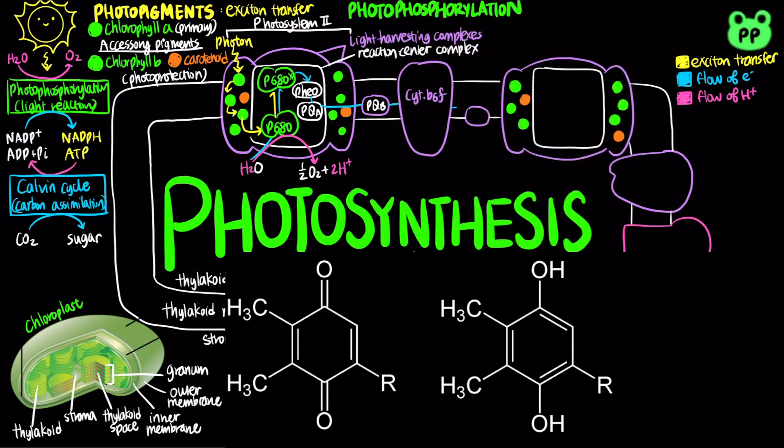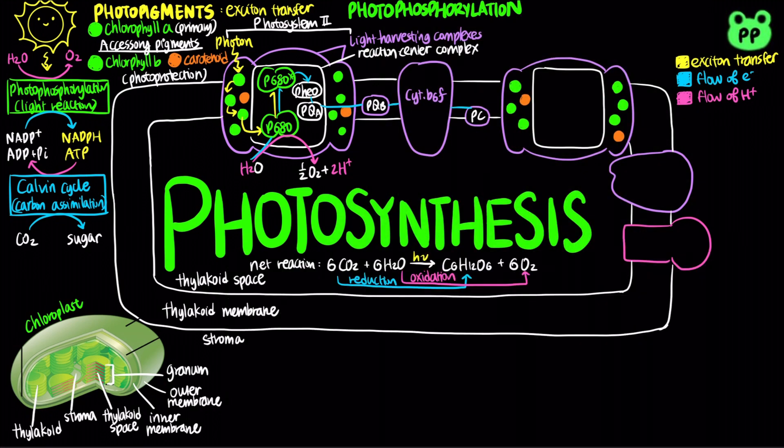This sequence of electron transfer is similar to the respiratory electron transport chain in oxidative phosphorylation, in which electron transfer to electron carriers with higher and higher reduction potential releases free energy that is coupled to the pumping of protons from the stroma into the thylakoid space.